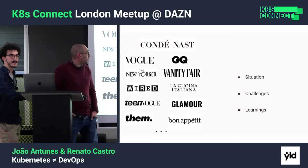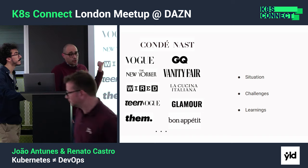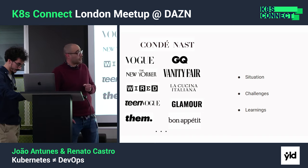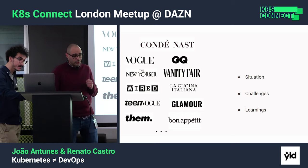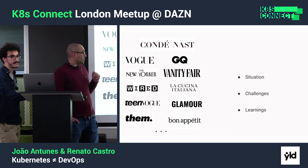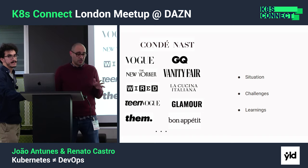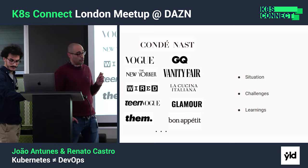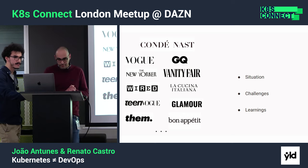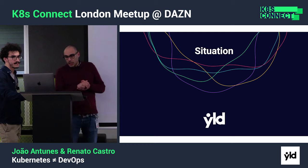For the people that don't know, Condé Nast is one of the biggest publishers in the world and they have brands globally in multiple markets. The challenge they have since the revolution of digital is to bring everything into one global platform.